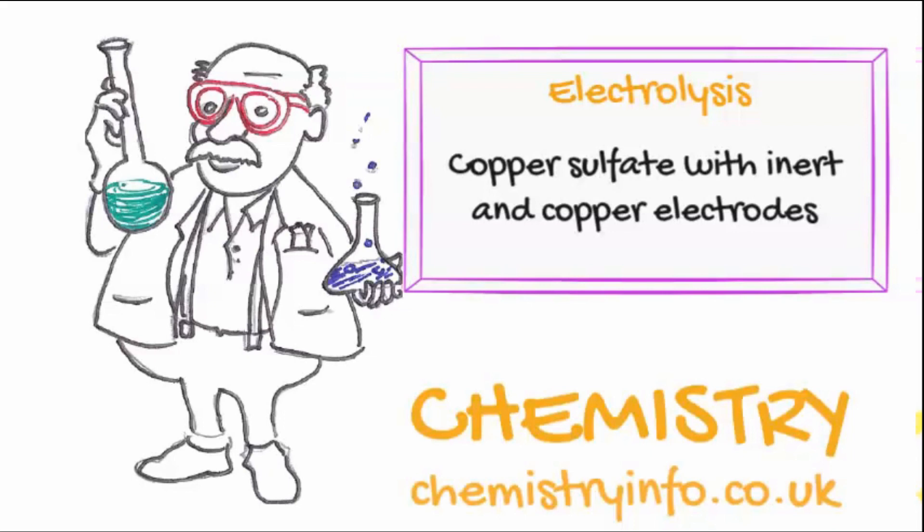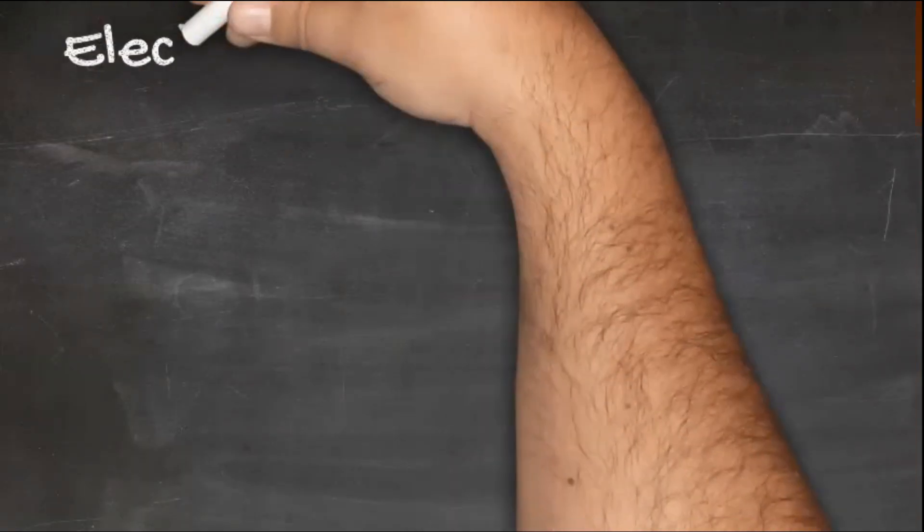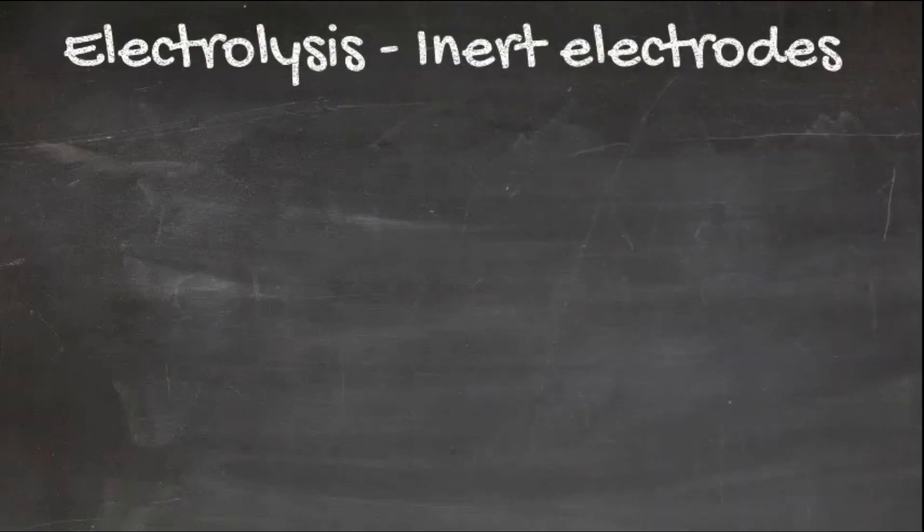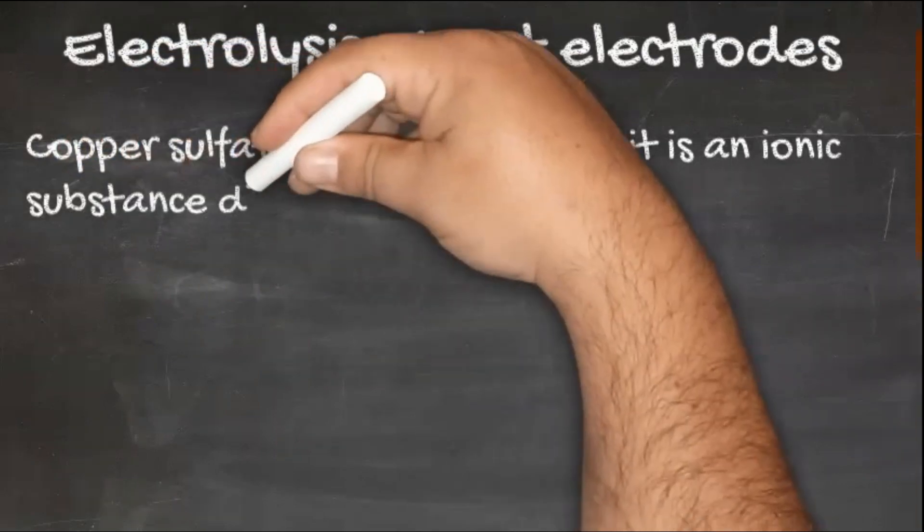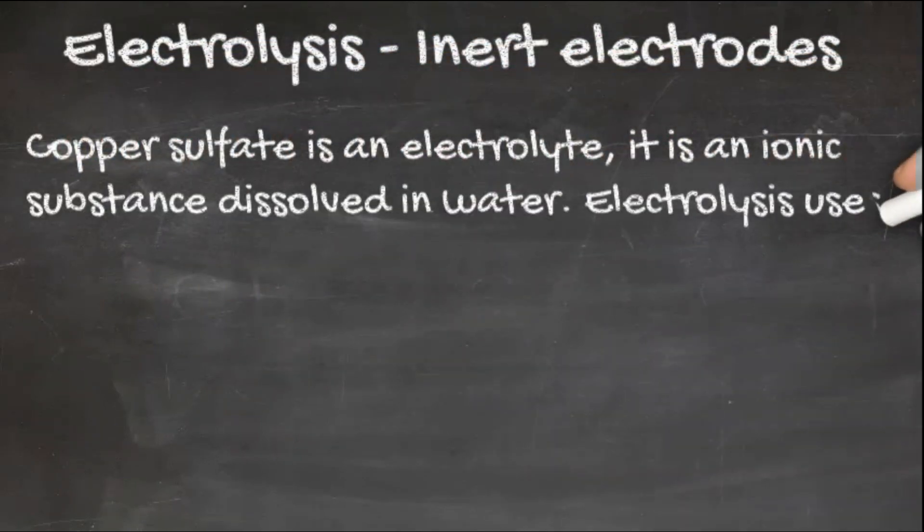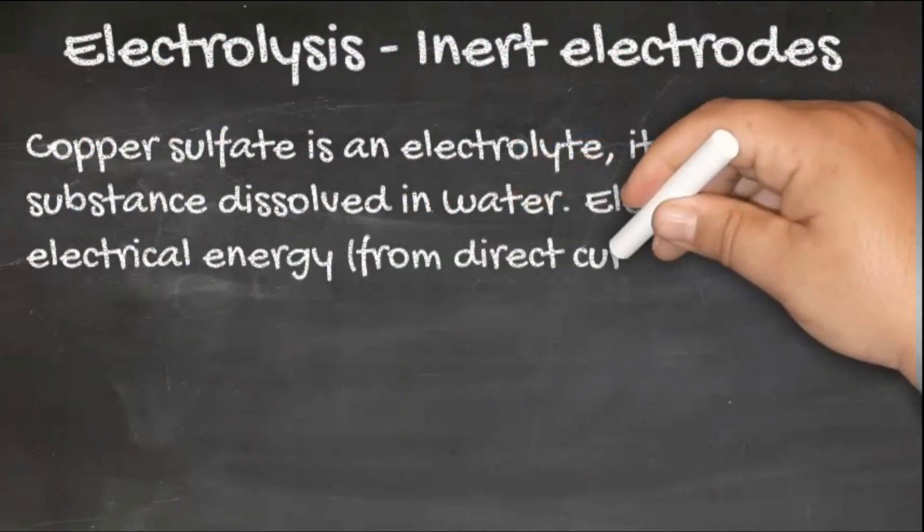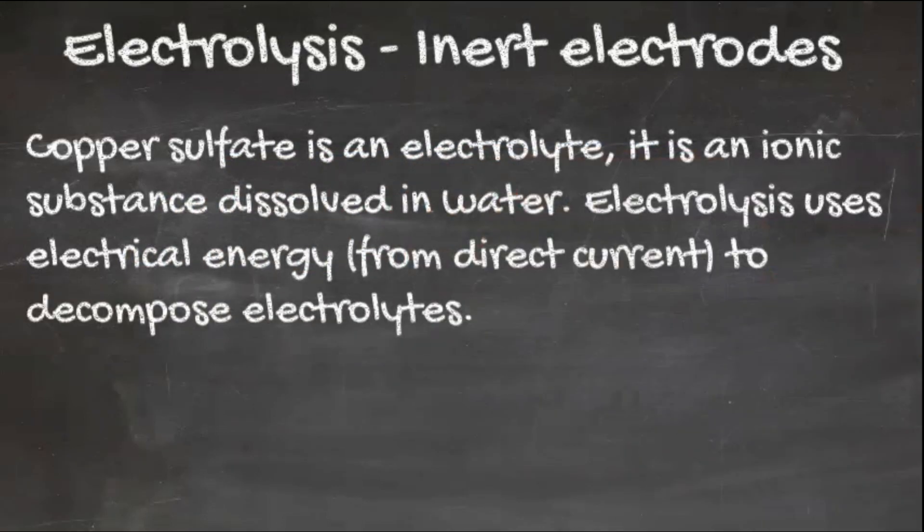Electrolysis starting with the inert electrodes. Copper sulphate is an electrolyte - it's an ionic substance dissolved in water. Electrolysis uses electrical energy from direct current to decompose electrolytes.